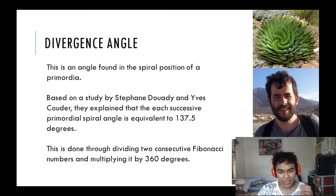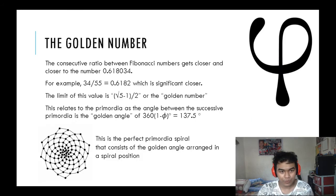How did they do this? What they basically did is that they divided two consecutive Fibonacci numbers. So let's say 34 and 55, they divided that and multiplied it by 360 degrees, and you get exactly 137.5.